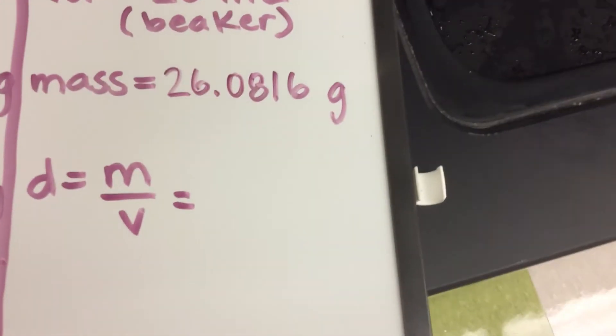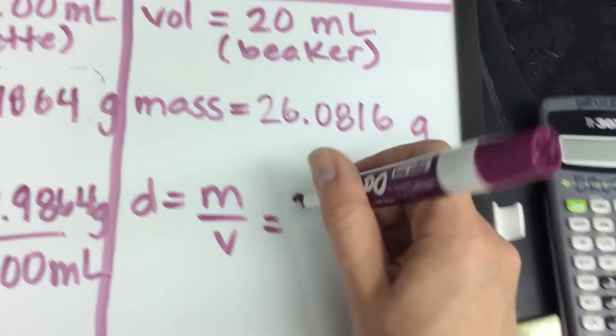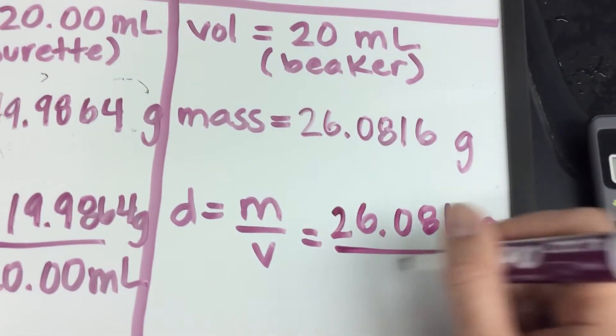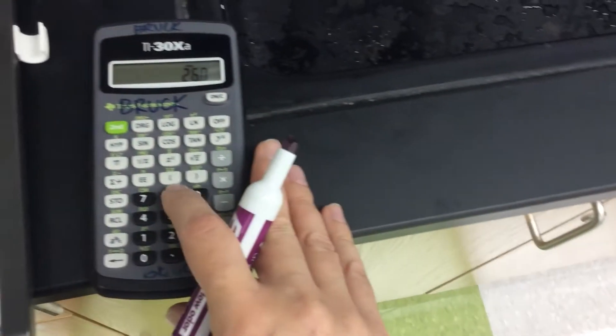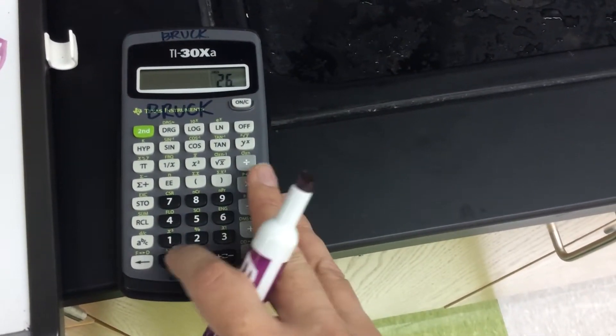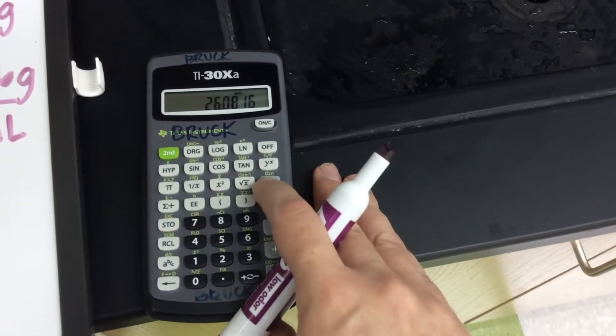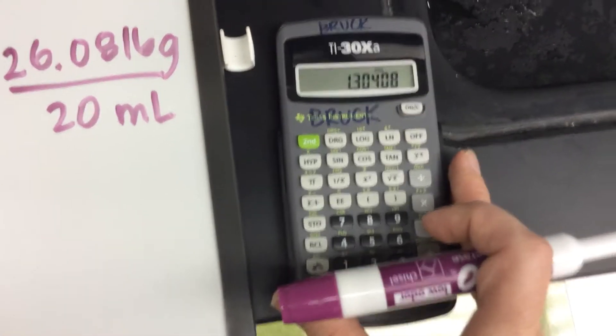Now let's do my calculation again. My mass is 26.0816 grams. My volume is 20 mils. So again, I do my arithmetic the exact same way. So 26.0816. This time we're dividing by 20. 1.30408.